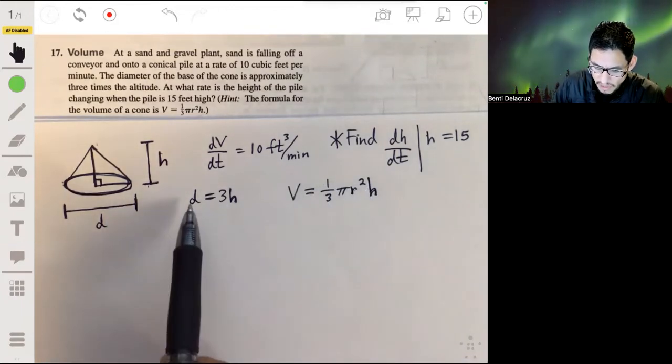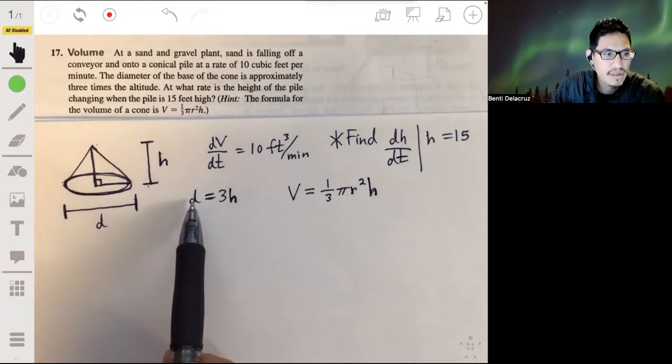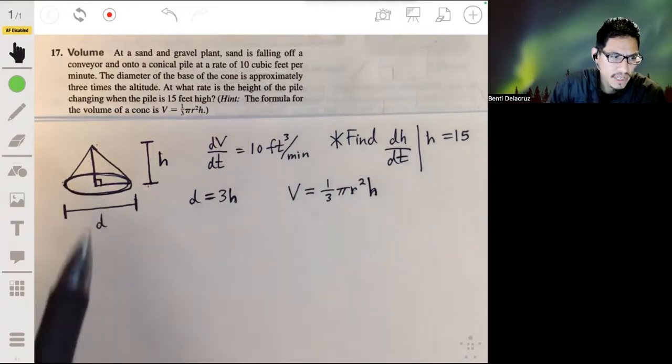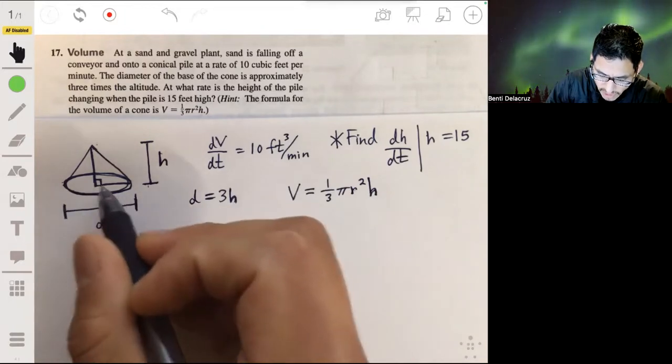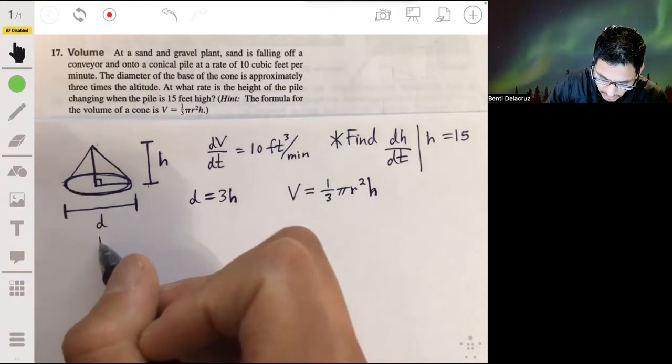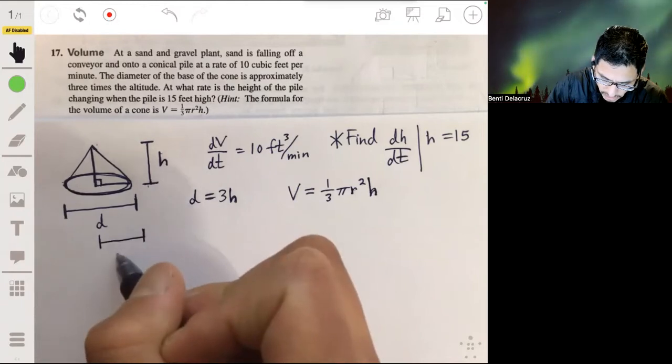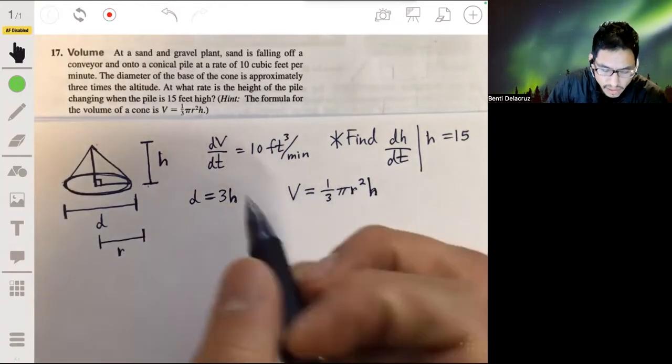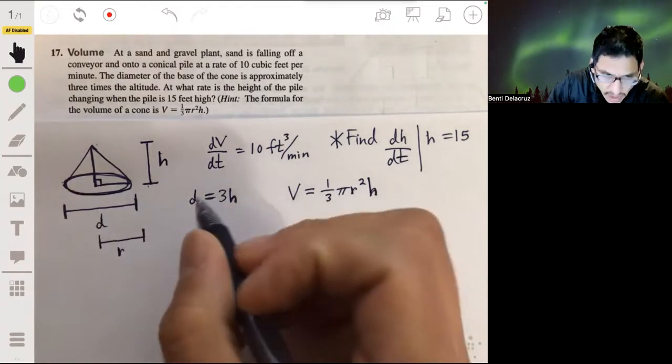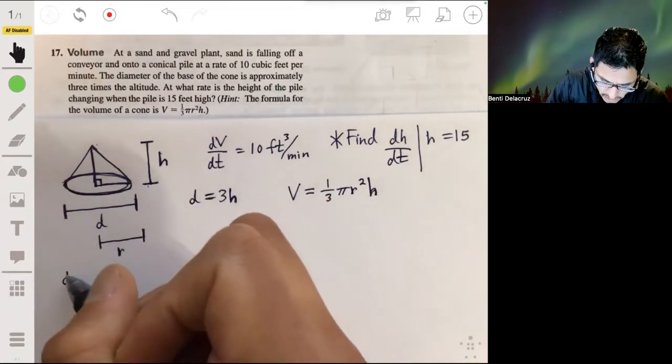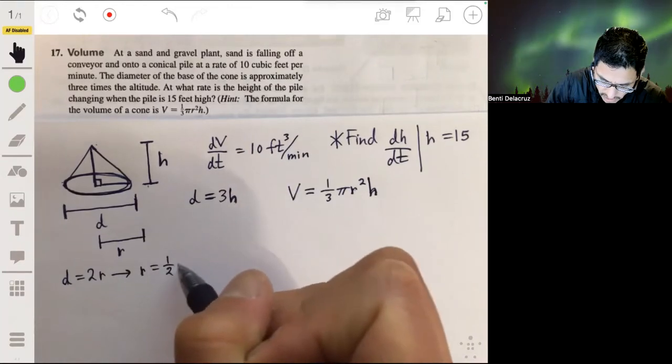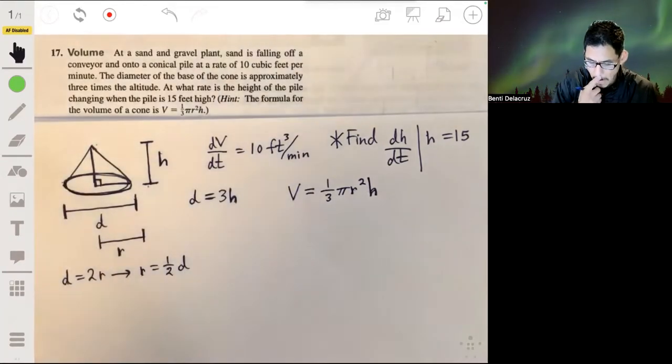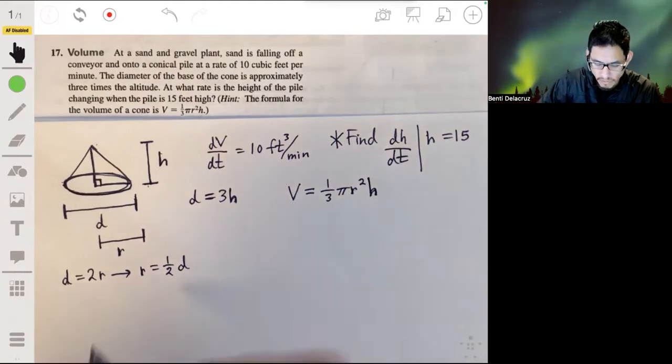So let's change diameter to be in terms of radius, since we don't have any diameter right here. So remember, diameter is two times the length of the radius. The radius is just half the diameter, so it's from here to here, the radius. So that would mean that d is two times r, or r is just one half the diameter, one half d.